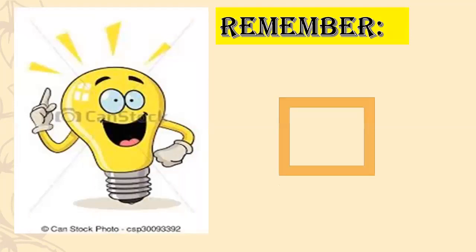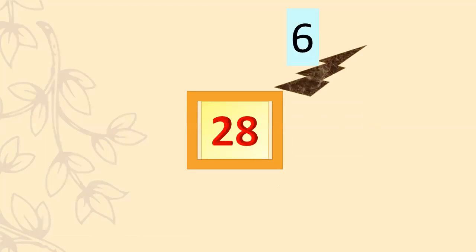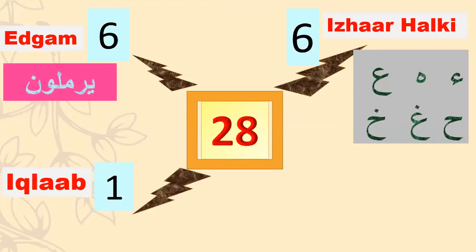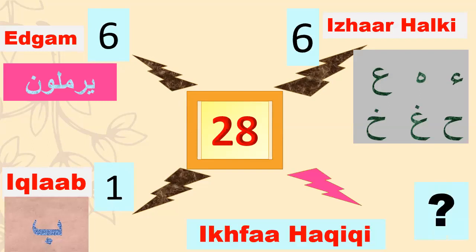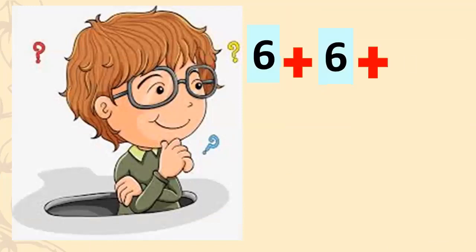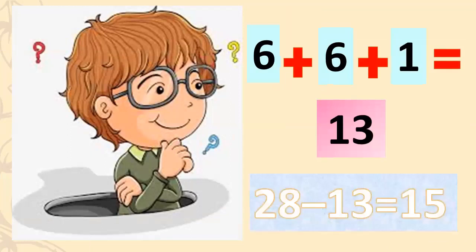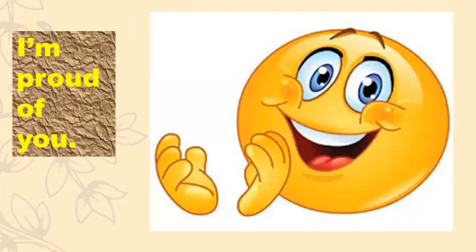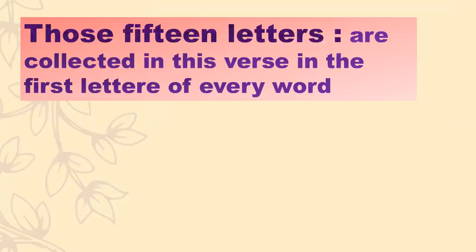Remember, the Arabic letters are 28 in total. Six letters are for Izhar, six letters for Idgham, and one letter for Iqlab. Six plus six plus one equals 13. Twenty-eight minus 13 equals 15. The letters of Ikhfaa are 15 letters. Yes, very good — I am proud of you!